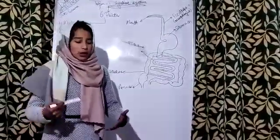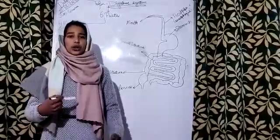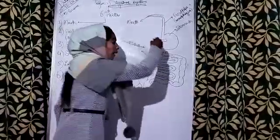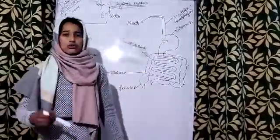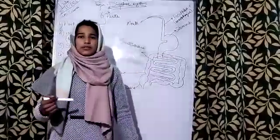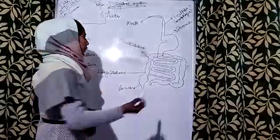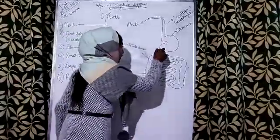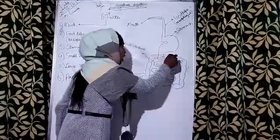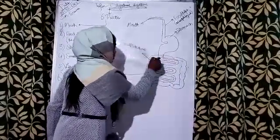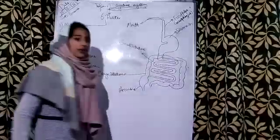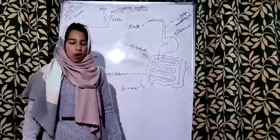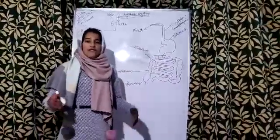In the stomach, the digestion continues and the food is broken down into nutrients. Here in the stomach, the digestive juices are mixed with the food. From the stomach, the food reaches to the small intestine.